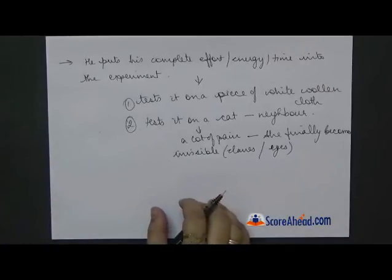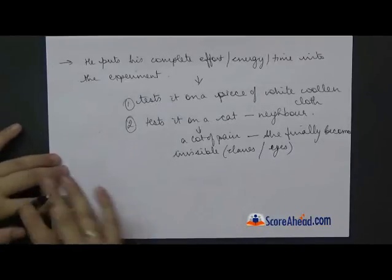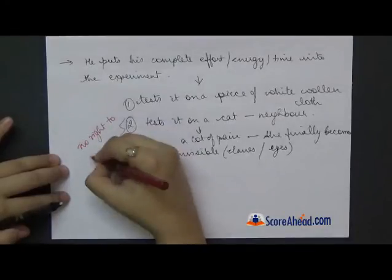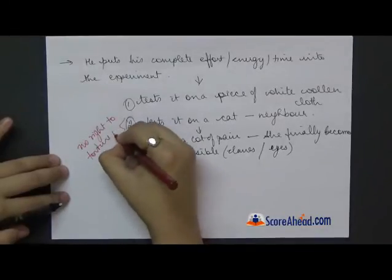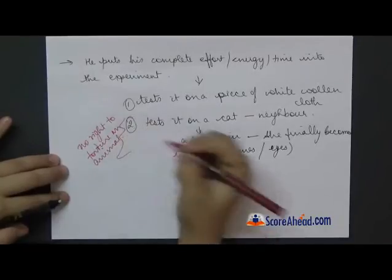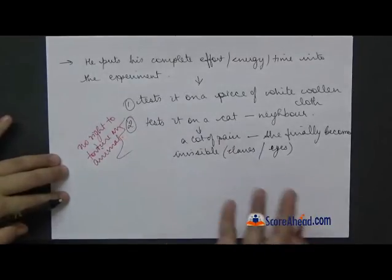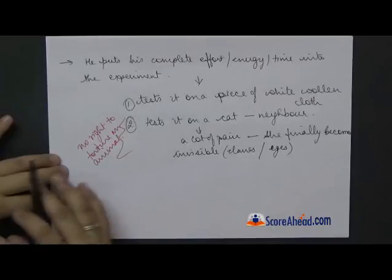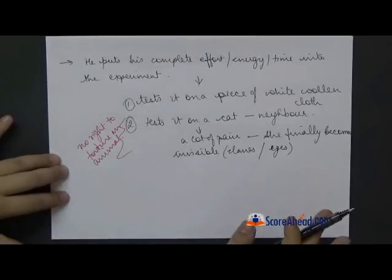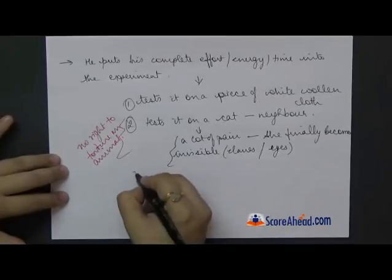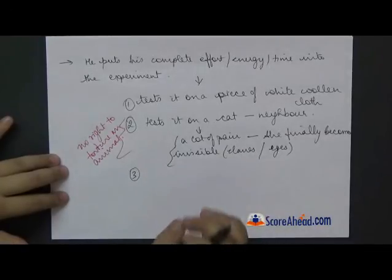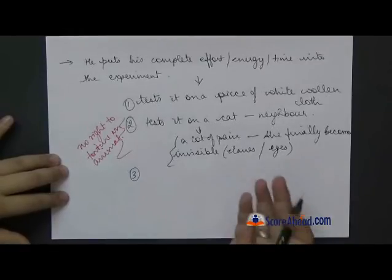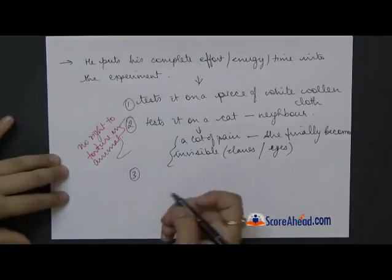And Kemp, when he is listening to all this, thinks it is so unethical. He has no right to torture an animal. But Griffin thinks nothing of it. A cat is nothing to him. The cat might be in pain, it might be suffering or whatever, but he has nothing related to that. He is just happy that his experiment is at least partially successful. Now, he just has to think of a way to get that color out of the way. So he thinks about it, and then something else follows.